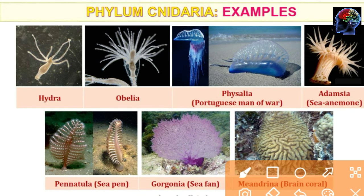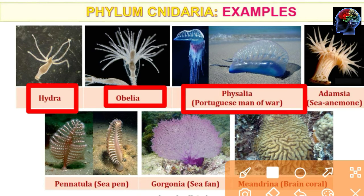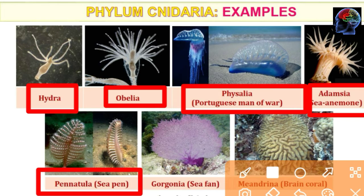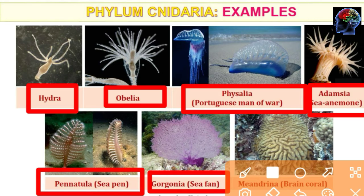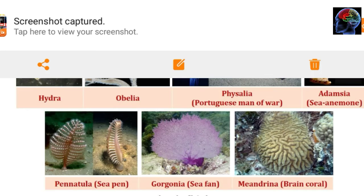Now the examples, which are most important for Animal Kingdom. The examples are: Hydra, Obelia, Physalia (called the Portuguese Man of War), Sea Anemone, Pennatula (called Sea Pen), Gorgonia (also called Sea Fan), and Meandrina (called brain coral).